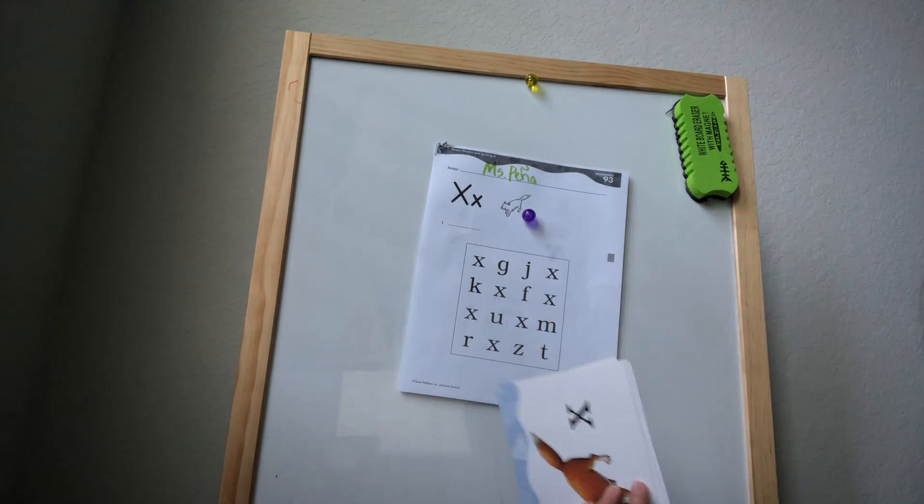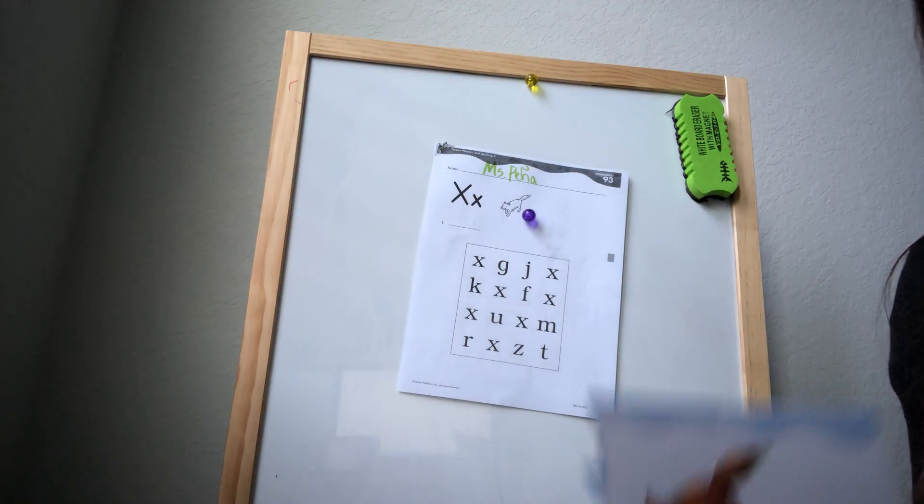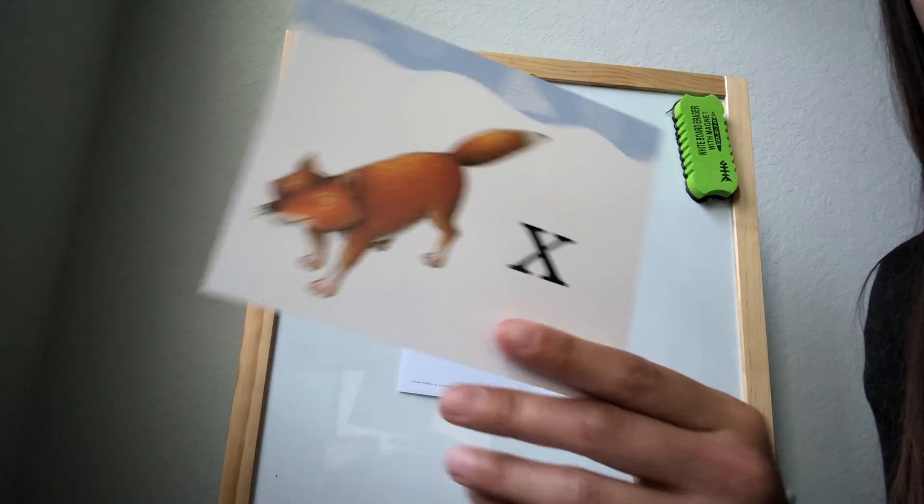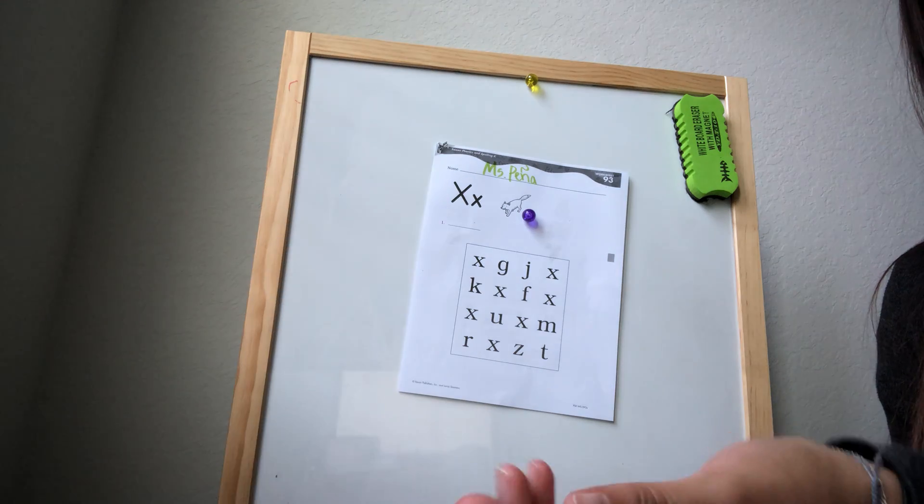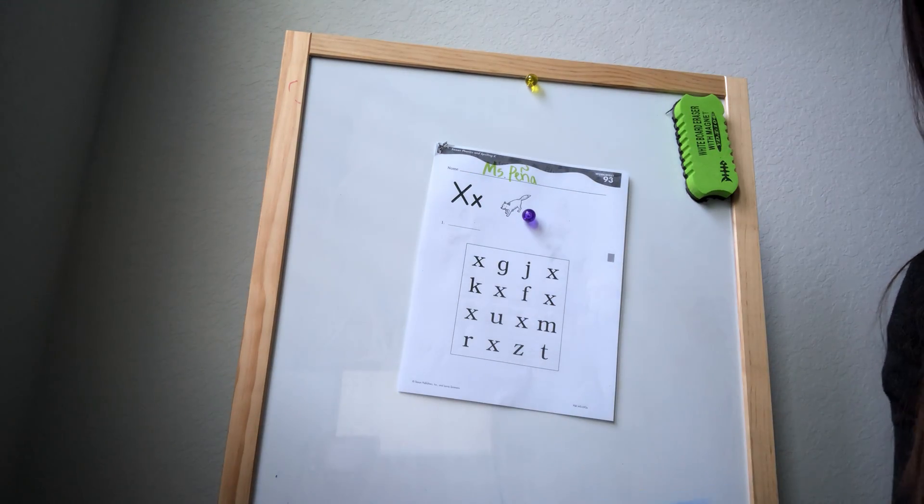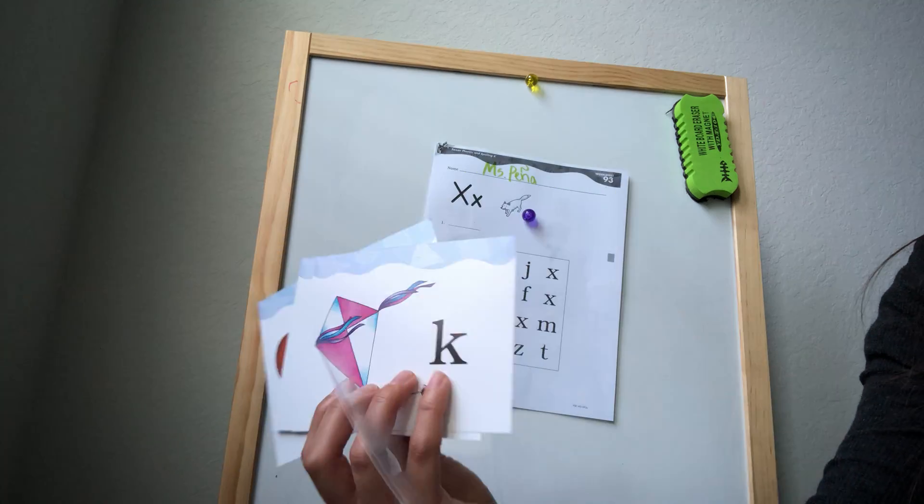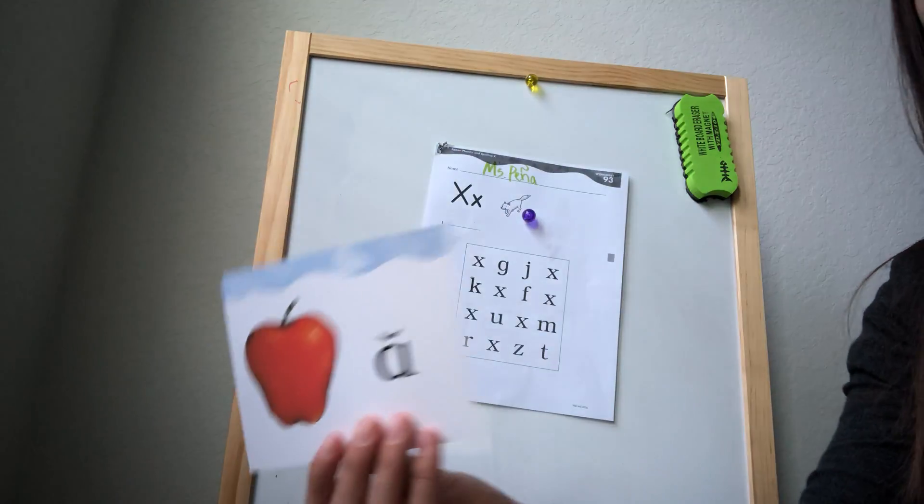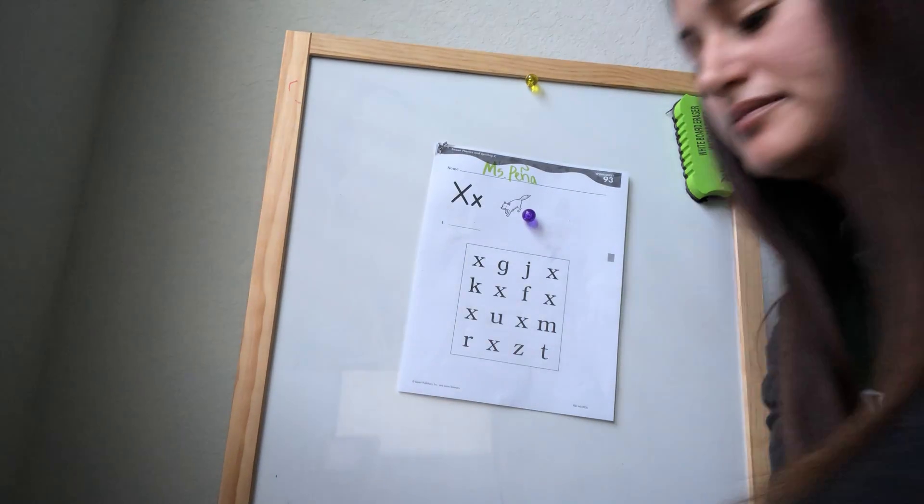And where did I put it? Oh, right here. Okay. And then our sound. Let's start with our new one. Fox X. Pig P. Rabbit R. Kite K. Jar J. And Apple A.